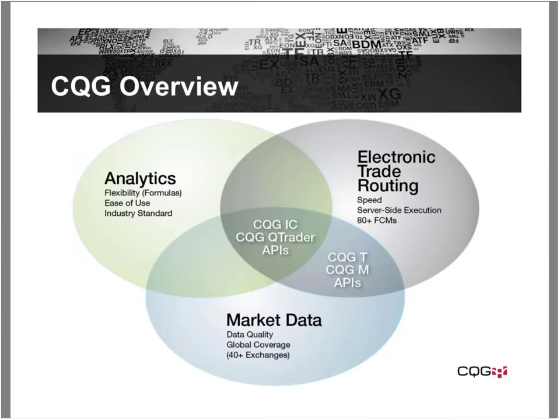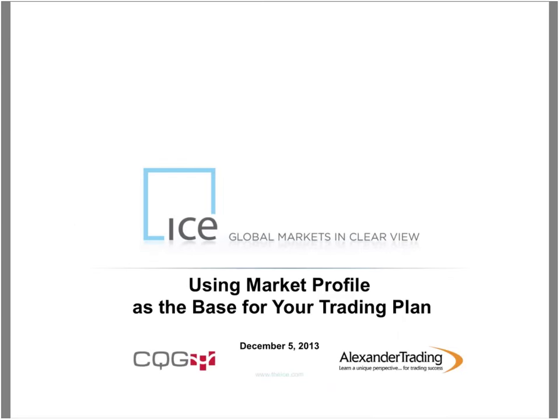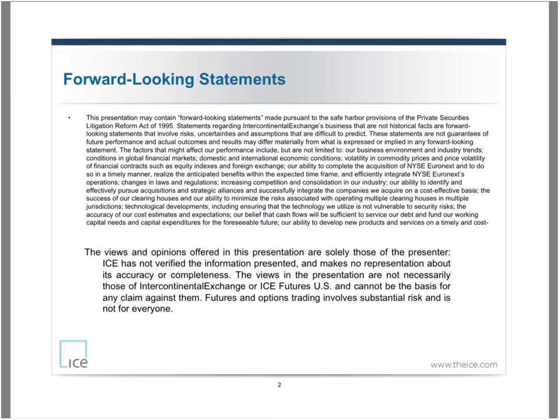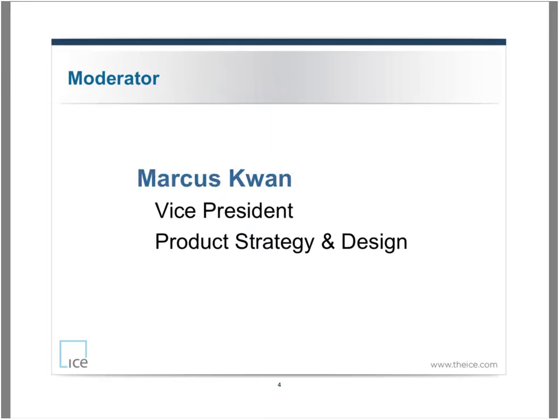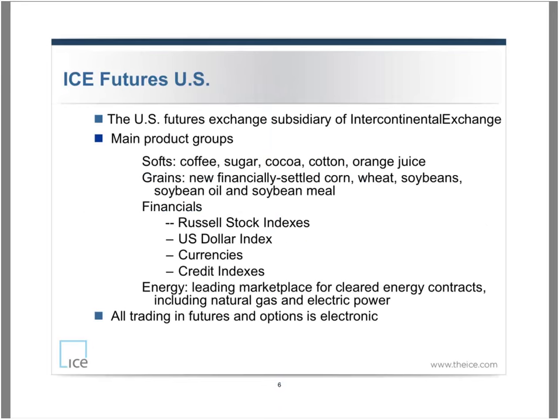Thank you very much. Let me move back to my slides. I'm going to say a few things about ICE. Most of you on the webinar today know who we are, but for those who don't, we are the subsidiary of the Intercontinental Exchange known as ICE Futures U.S. We are primarily the old New York Board of Trade, or NYBOT. Our main product groups are the softs — we're the biggest market in the world for sugar, coffee, cocoa, cotton, and orange juice.